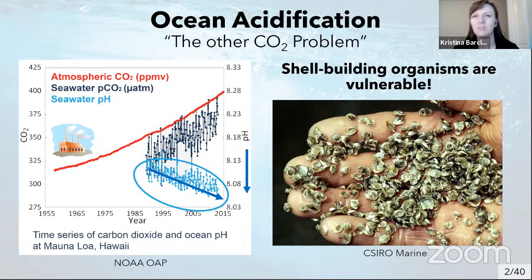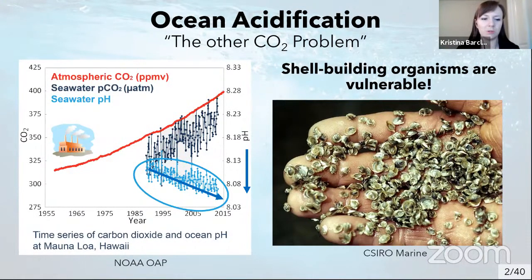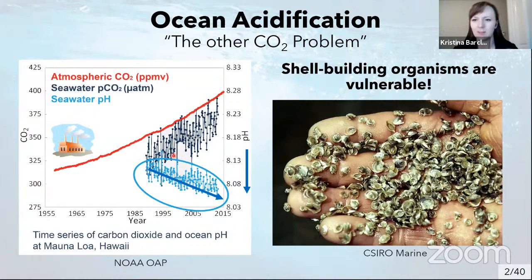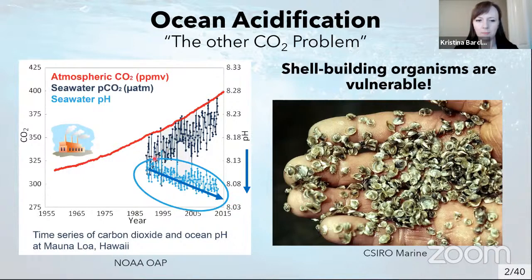Ocean acidification — those of you who know some of the basics have probably heard it called the other CO2 problem. It's sort of the hidden side of carbon dioxide emissions. As our CO2 emissions have increased, about 30% of those emissions actually get absorbed by seawater. This creates a chemical reaction, and one of the end products is an excess of hydrogen ions, which drives the pH of seawater down. As carbon dioxide increases, pH decreases.